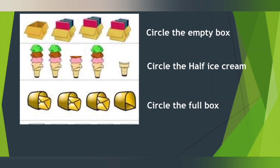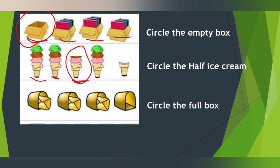In the first picture, circle the empty box. In the first one, nothing is there — it's empty, so circle it. In the second one — you like ice cream! It's very interesting. The first scoop has four scoops, it's full. The second one also has four scoops, full. The third one has only two scoops — that means half. Only half is there.